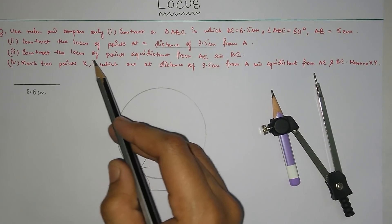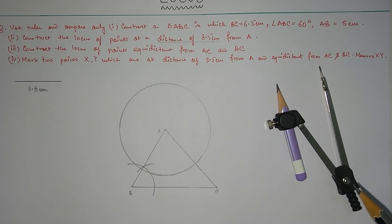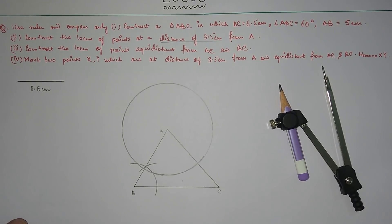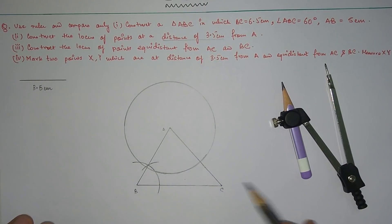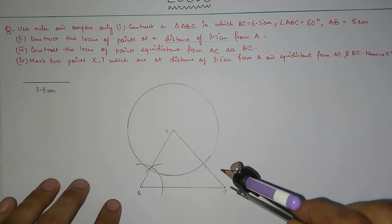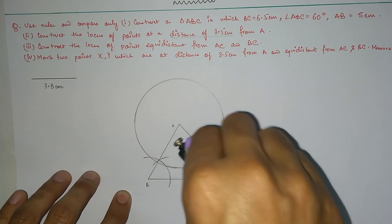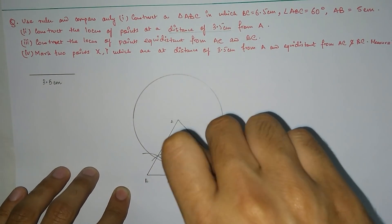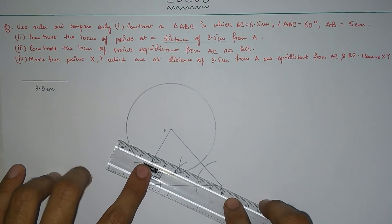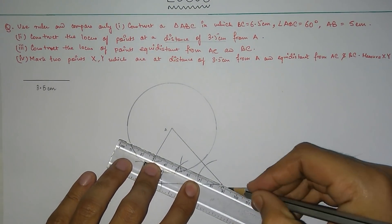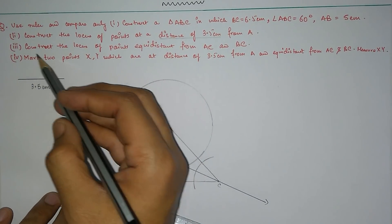Number three: construct the locus of points equidistant from AC and BC. As told previously, the locus of points equidistant from two intersecting straight lines is the angle bisector. The angle to be bisected here is angle C, because the lines are AC and BC. We take the compass, place it on C, make arcs on both sides, then from the intersection points make further arcs, and join them to C to get the angle bisector. This line is the angle bisector and is the answer to question number three.